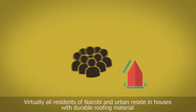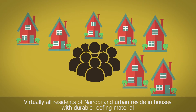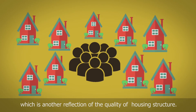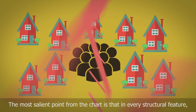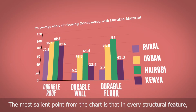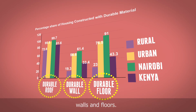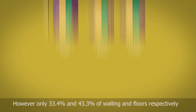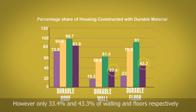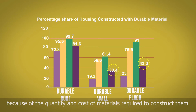Virtually all residents of Nairobi and urban areas reside in houses with durable roofing materials, which is another reflection of the quality of housing structure. The most salient point from the chart is that in every structural feature, the urban households generally have more durable roofs, walls and floors. However, only 33.4% and 43.3% of walling and floors respectively are made from durable materials in Kenya as a whole, because of the quantity and cost of materials required to construct them.